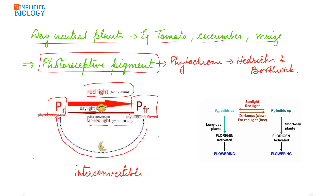It is the PFR form that is physiologically active. During the day, PR changes into PFR, and during the night, PFR changes back into PR. It is the PR form that causes flowering in short day plants, while in long day plants it is the PFR form that causes flowering.